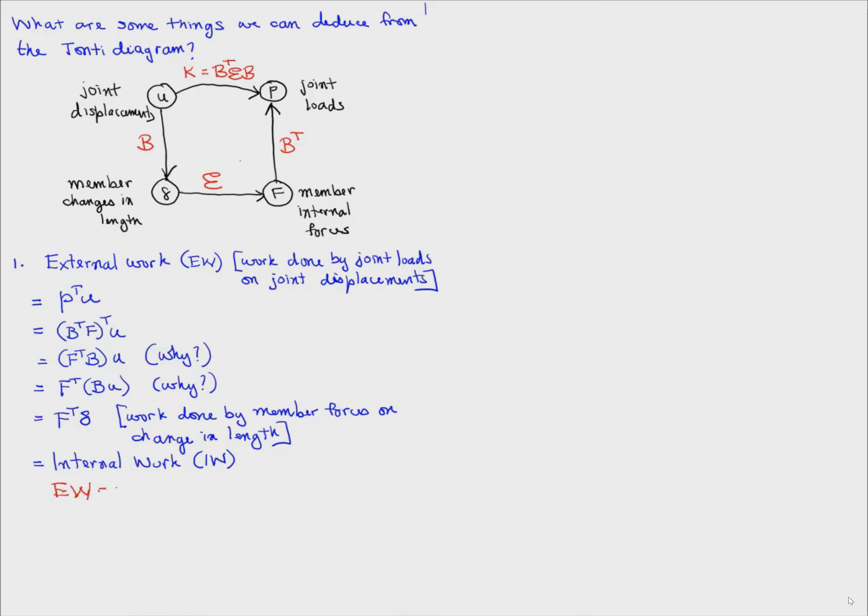So what we see here is external work equals internal work, and this is the principle of virtual work. The fact that the equilibrium matrix is the transpose of the b matrix leads to external work equals internal work.